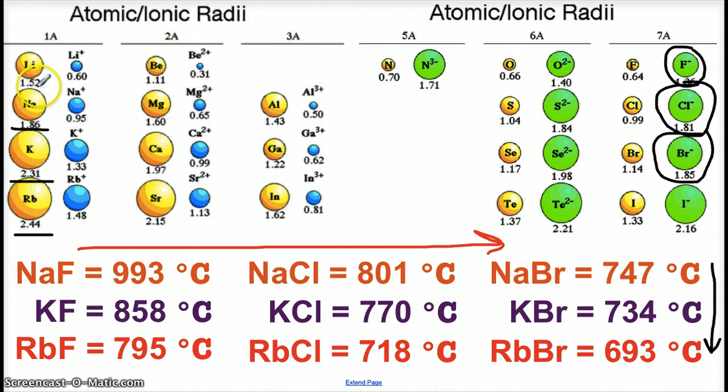We can also look this way across our information: sodium fluoride, sodium chloride, sodium bromide. This time we're keeping the sodium ion the same at 0.95 angstroms, and we're looking at fluoride, chloride, and bromide that are getting bigger. That's why the melting point is going down from sodium fluoride to sodium chloride to sodium bromide.